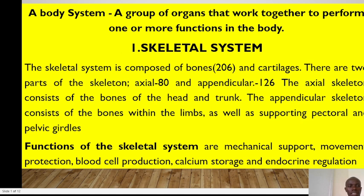Hello and welcome to this session. We are looking at a brief overview of the 12 body systems. This topic will be revisited when you will be handling anatomy too, but for now let's just get an overview. A body system is a group of organs that work together to perform one or more functions of the body.